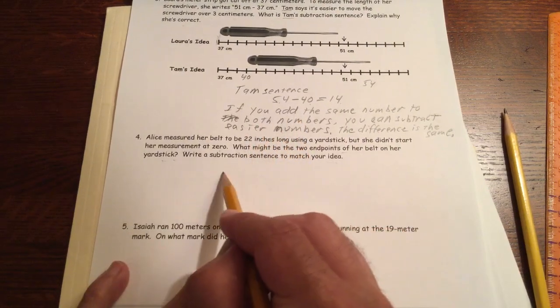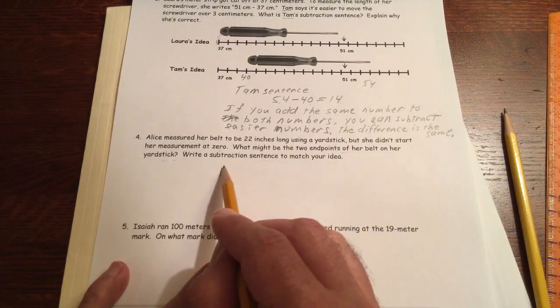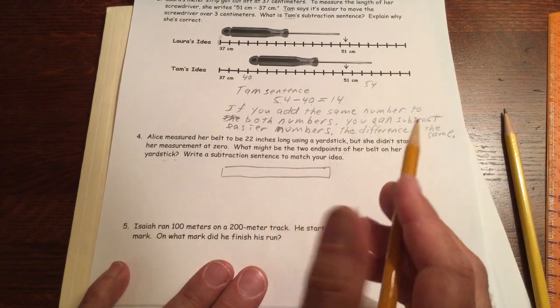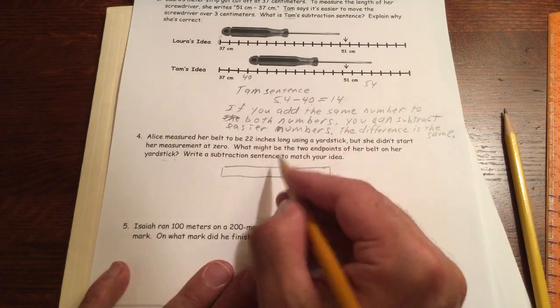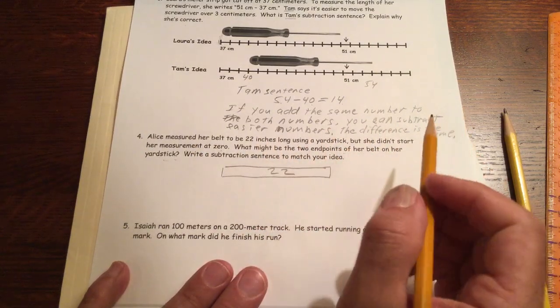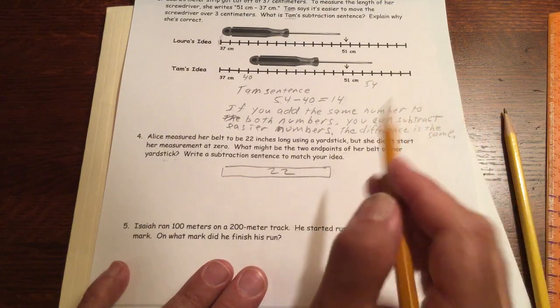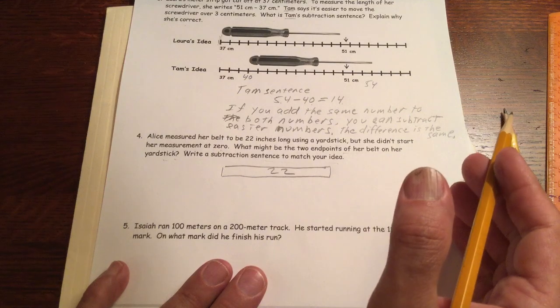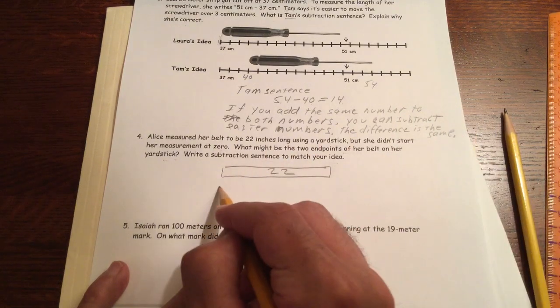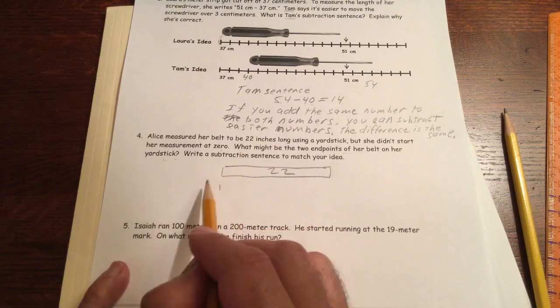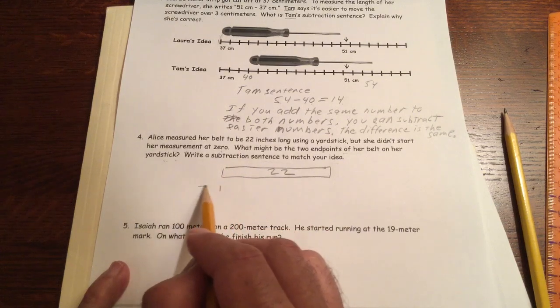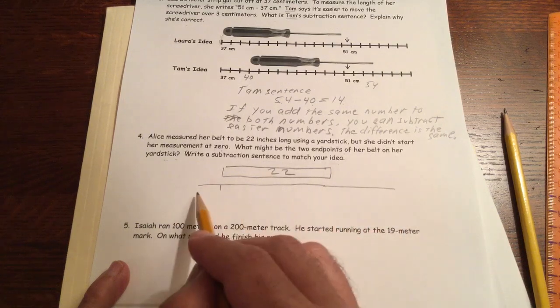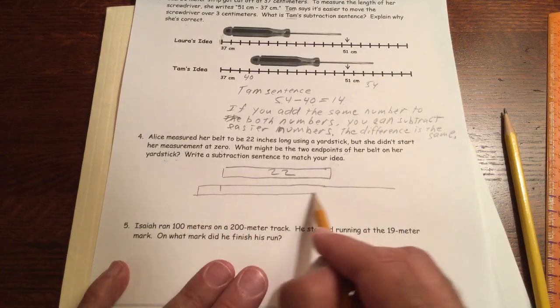So let's see. Her belt is going to look just like a piece of tape, a tape diagram here. So this is 22 inches long. But her yardstick, she didn't start at zero. So what's an easy number to start at? If you don't start at zero, you could start it at... Let's draw the yardstick here. Here's the whole yardstick.